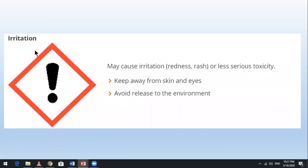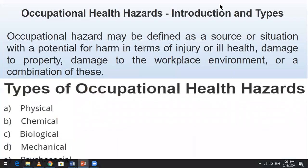Some hazards may cause irritation — redness, rash — or less serious toxicity. Moving on to occupational health hazards: an occupational health hazard may be defined as a source or situation with the potential for harm in terms of injury, health damage, damage to property, or damage to the workplace environment.